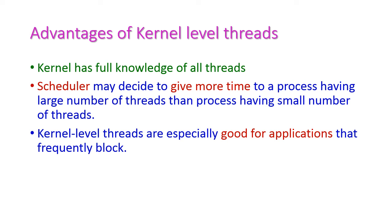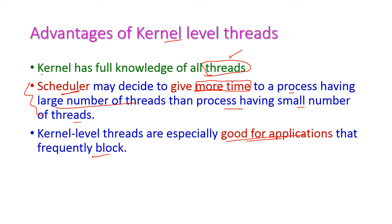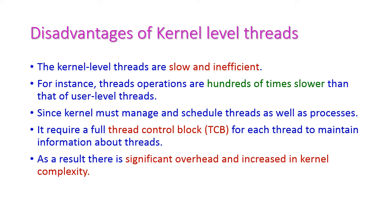The advantages of kernel level threads: The kernel has full knowledge of all threads. The scheduler in the kernel decides how much time to give each process based on its number of threads — a process with more threads gets more execution time, and one with fewer threads gets less. Kernel level threads are especially good for applications that frequently block, because all threads are known to the kernel.